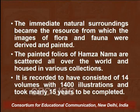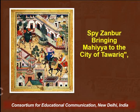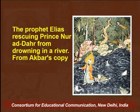The Hamza Nama is recorded to have consisted of around 14 volumes with more than 1400 illustrations, and it took almost 15 years to be completed. One visual from Hamza Nama depicts a famous narrative about the spy Zanbar bringing Mahiya to the city of Tawarik. Another visual shown is the Prophet Elias rescuing Prince Noor Adhar from drowning in a river.